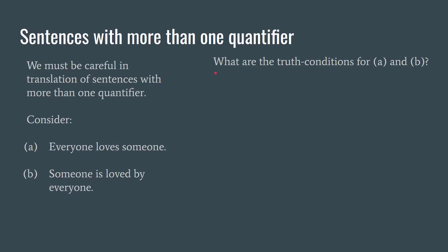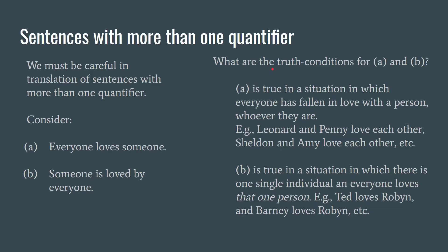Now when you're trying to translate sentences with more than one quantifier, as with any sentence, your job is to ask yourself under what conditions are these sentences true. And what you need to capture with your translation is those truth conditions. So A is true in a situation in which everyone has fallen in love with a person, whoever they are. It doesn't matter whether everyone has fallen in love with the same person or with someone different. Whereas what B is communicating is that there's some one person and everyone loves that one person. A and B represent two very different situations in the world. So our logical translation needs to represent these differently.